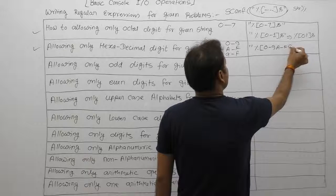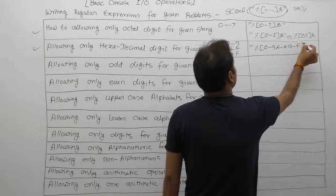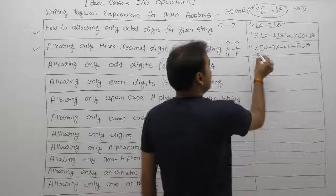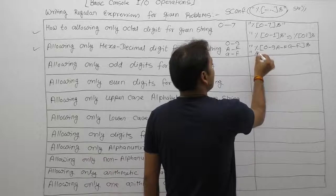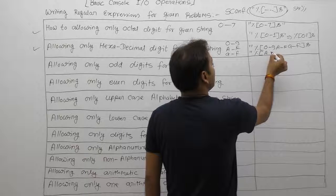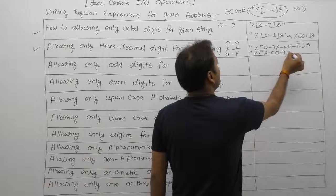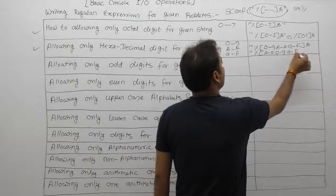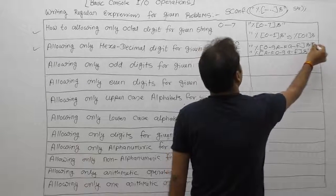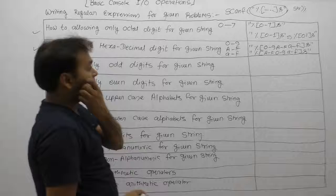The hexadecimal regular expression is written like: percent, square bracket, 0 to 9, then A to F (uppercase), then a to f (lowercase), closing square bracket, 's'. Another way of writing it is: percent, square bracket, 0 to 9, a to f (lowercase), closing square bracket, 's'. Both are valid ways of writing the regular expression for hexadecimal.